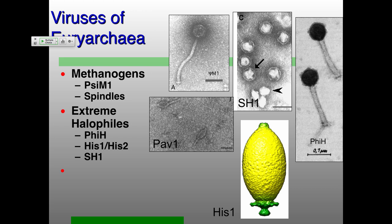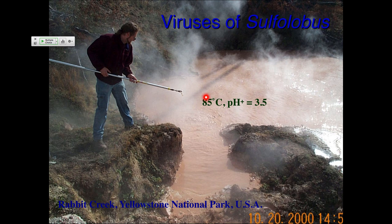So those are the Euryarchaeotes. What about the Crenarchaeotes? Where do you find them? You use a long pole to collect the samples. This particular hot spring is in Yellowstone National Park — 85 degrees Celsius, pH of about 3.5. This hot spring really does look like tomato soup; it's a much brighter red color than it appears on the projector. We did find some Sulfolobus in this particular spring — not quite boiling, but a really classic Sulfolobus-like environment.